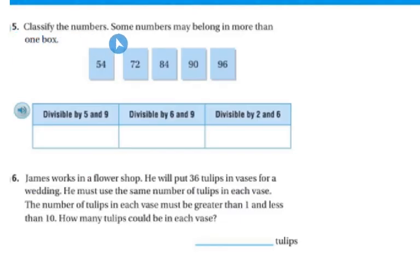Number 5 is to classify the numbers. Some numbers may belong in more than one box. So 54, we know it's not divisible by 5 so it can't go in there because it doesn't end in 5 or 0. But it is divisible by 6 and 9. And it's also divisible by 2 and 6. Now 72. Actually, I'm just going to do this 5 and 9 one first. We know these are not going to be divisible by 5. So they cannot go in there. But 90 is divisible by both 5 and 9. So that's the only one that's going to be in there.